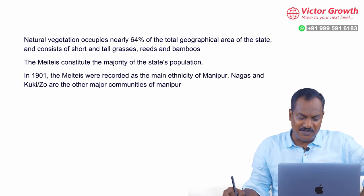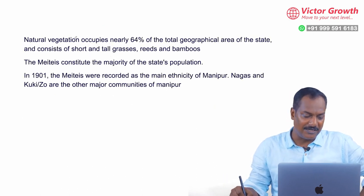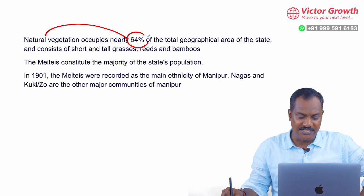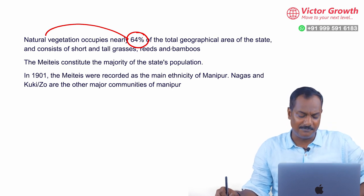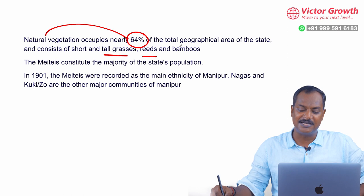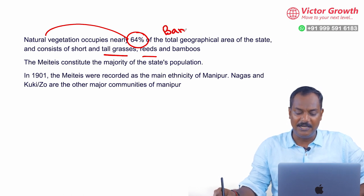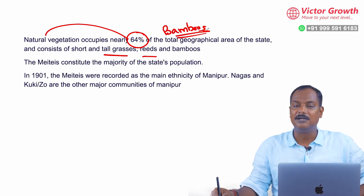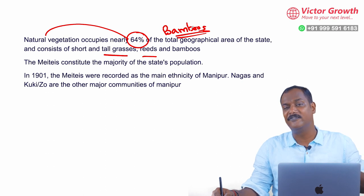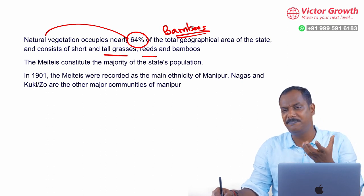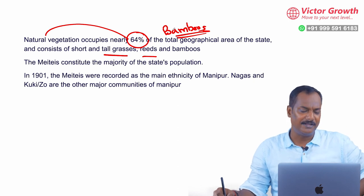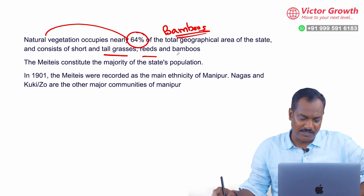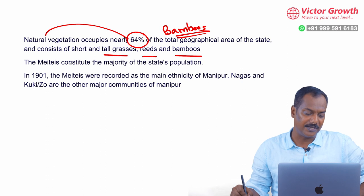If you look at the natural vegetation, it occupies around 64% of the total area, making it a very important biome in Manipur. Some of them are tall grasses and reeds, but many people believe that bamboo is the most important component of Manipur. They have eating dishes and recipes made from bamboo. Bamboo is used for daily activities and even the construction of houses.